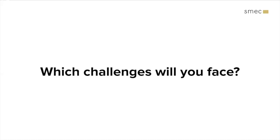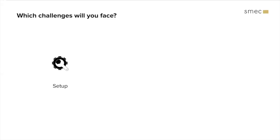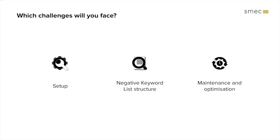Now let's look at the challenges you'll face. Challenges start with the setup, continue through creating negative keywords, and carry on into maintenance and optimization — applying different goals, different bids, and so on. Just creating this structure is not enough; you have to maintain it. Starting with the setup: if you want to use this approach you need to use the same campaign setup multiple times — for example, if your campaigns are split by category, you need three times the 'clothing' campaign, three times the 'shoes' campaign, and so on for every stage of the funnel.